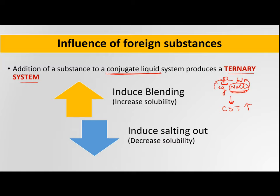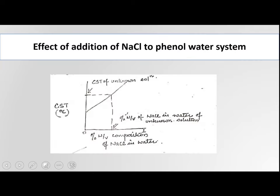On the other hand, if we add a component whose solubility in both phenol and water is equal — meaning the third component is equally miscible in both — then the addition of that third component in the conjugate system will improve the solubility.